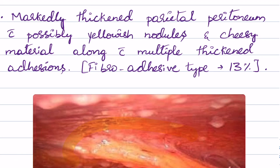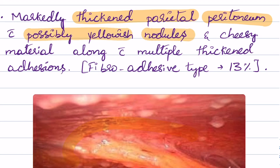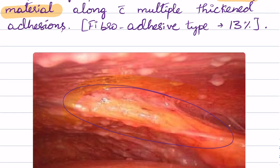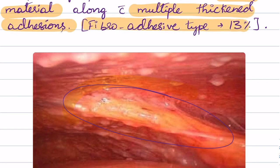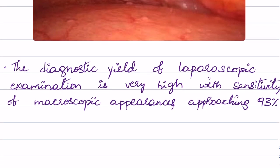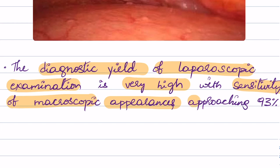The third type of presentation in TB peritonitis is markedly thickened peritoneum with possibly yellowish nodules and cheesy material, along with multiple thickened adhesions. This type is also called the fibroid adhesive type and is seen in 13% of patients. The diagnostic yield of laparoscopic examination is very high, with the sensitivity of microscopic appearances approaching 93%.